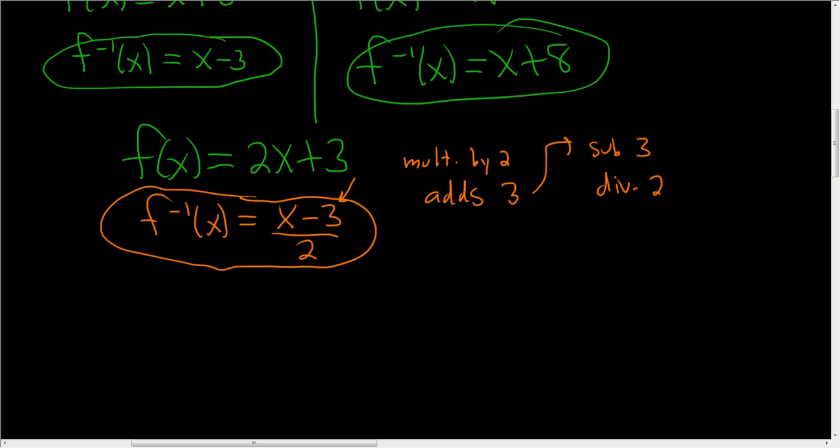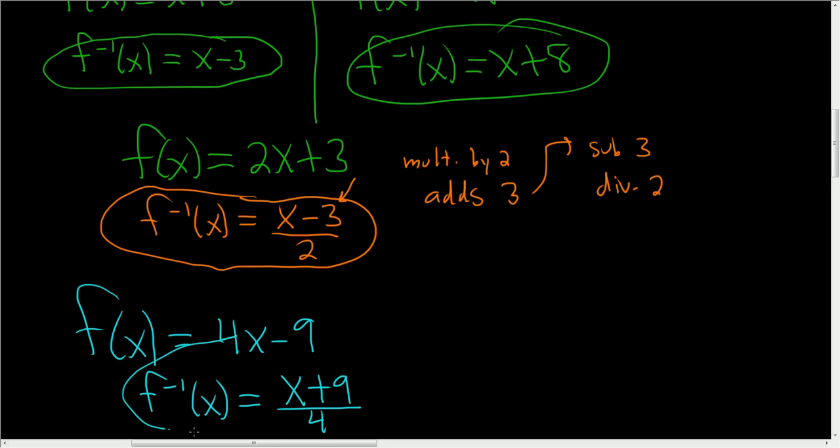Let's try another one. f of x equals 4x minus 9. Here f takes x, multiplies it by 4, and then subtracts 9. So to undo that, we have to add 9, and then divide by 4. That's the answer.